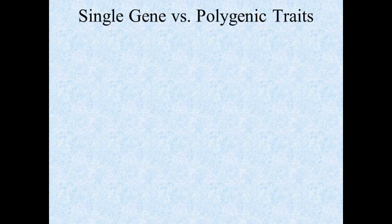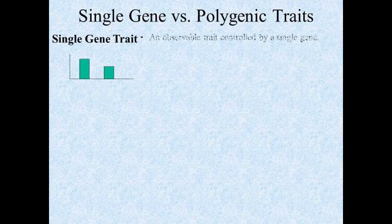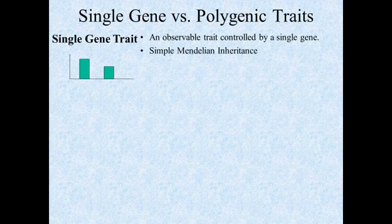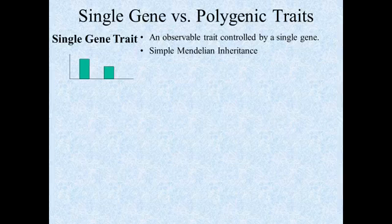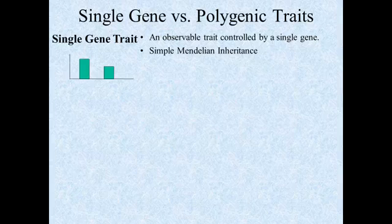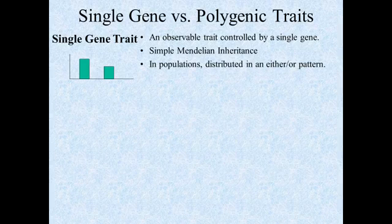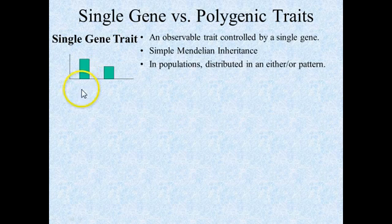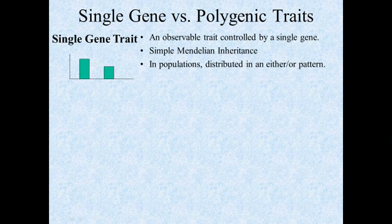First we'll start with a quick review of the differences between polygenic traits and single gene traits. Single gene traits, as you may recall, are observable traits that are controlled by a single gene. They usually are inherited in the form of simple Mendelian inheritance, although they can also be incomplete dominant genes. In populations we usually see these genes in an either-or pattern, as shown here, where we have either one or the other — this bar graph can change depending on which one is more or less common in the population.